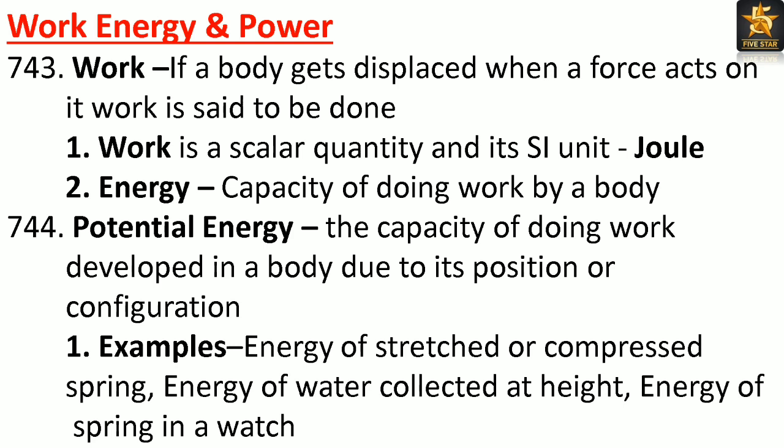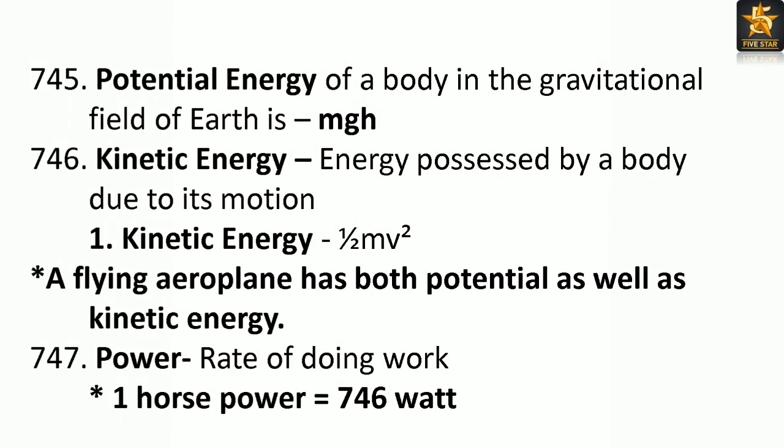Potential energy: The capacity of doing work developed in a body due to its position or configuration. Examples: energy of a stretched or compressed spring, energy of water collected at height, energy of a spring in a watch. Potential energy of a body in the gravitational field of Earth is mgh.